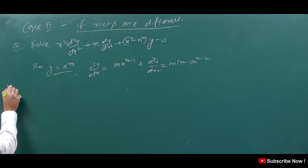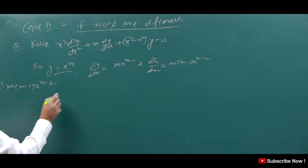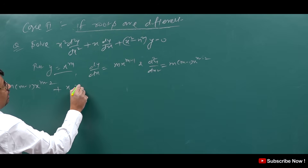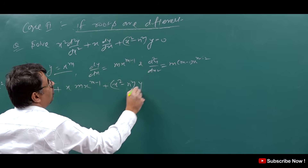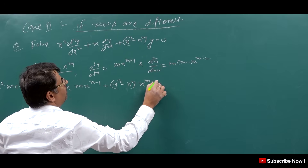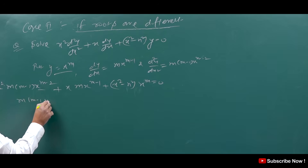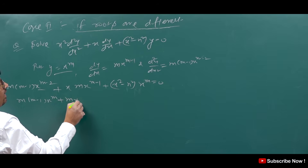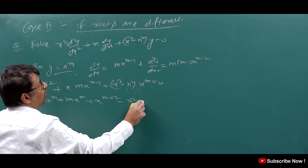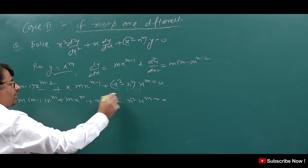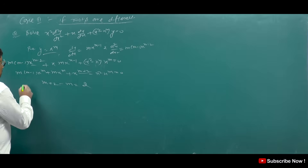We substitute these values. The equation becomes: m(m−1)·x^m + m·x^m + x^(m+2) − n²·x^m = 0. Looking at the highest degree term, it is m+2, and the least degree term is m. The difference between both is 2. So for the solution, we will take the form accordingly.